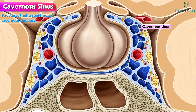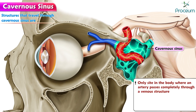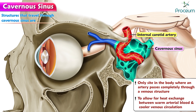The structures that travel through the cavernous sinus are the abducens nerve, cavernous portion of the internal carotid artery, and the carotid plexus, or postganglionic sympathetic nerve fibers. Please note that the cavernous sinus is the only site in the body where an artery — in this case the internal carotid artery — passes completely through a venous structure. This is thought to allow for heat exchange between the warm arterial blood and cooler venous circulation.